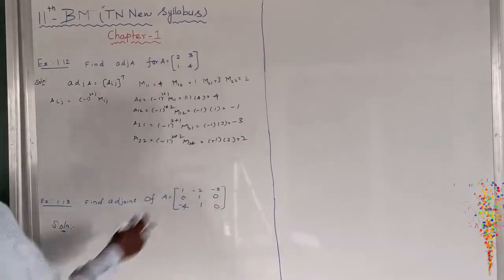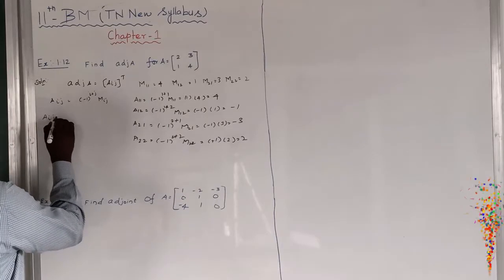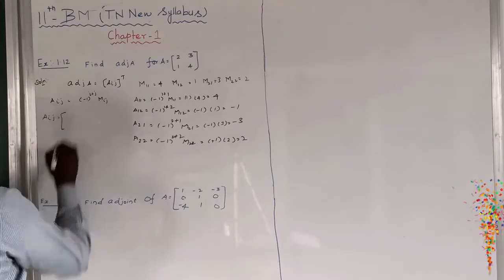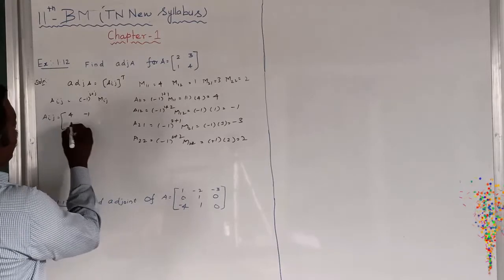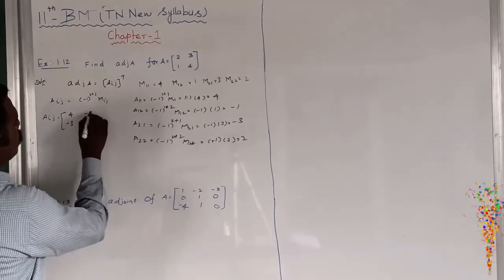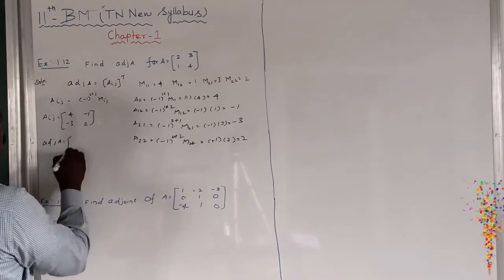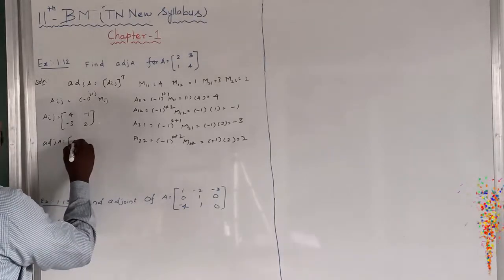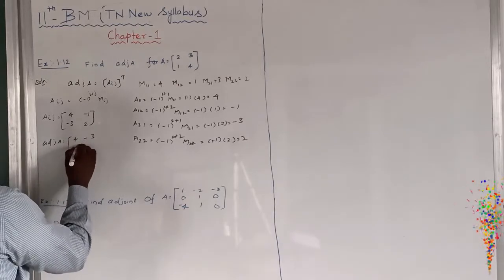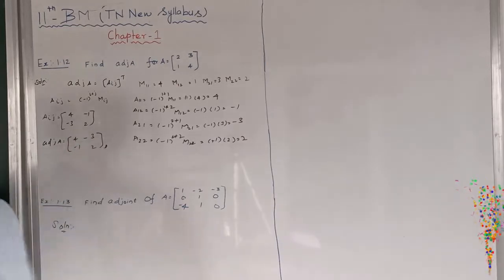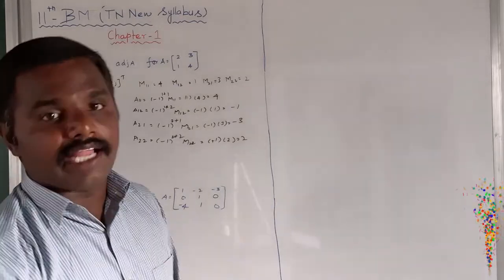So now we find the adjoint. The cofactor matrix Aij has elements: A11=4, A12=minus 1, A21=minus 3, A22=2. The adjoint of A is the transpose of that cofactor matrix, giving [4, minus 3; minus 1, 2]. This is the proper way to find out the adjoint of A.